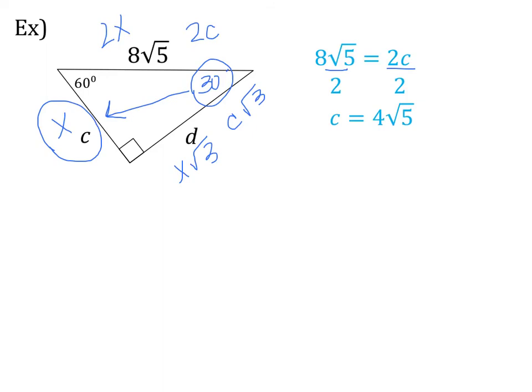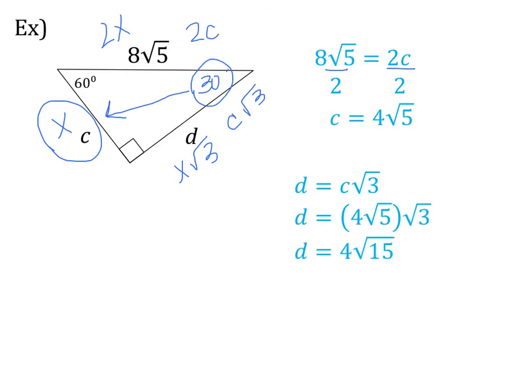Now I know that d is equal to x√3, which is the same thing as c√3, since x and c are the same. So d = c√3. I've just found that c = 4√5, so I can plug that in: d = 4√5 times √3. The √5 and √3 are both inside the radical, so they multiply, giving d = 4√15.